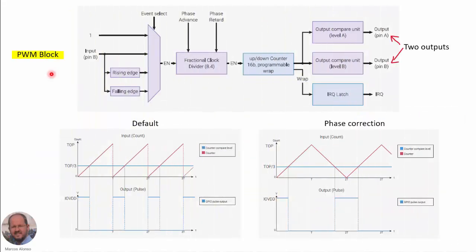Here we have the schematic of the PWM block obtained from the datasheet. We have first an event selector, then a divider, the counter, and then two outputs in each PWM block. In the datasheet they talk about a slice — this schematic corresponds to one slice, with two outputs and one output for an interruption. In the default mode we have the ramp generated by the counter, then a comparison with a given value to produce the PWM waveform. There is also a phase correction mode, which uses a double ramp.